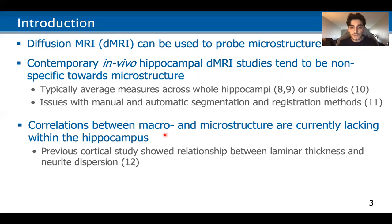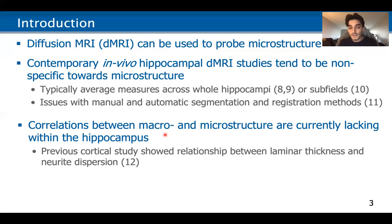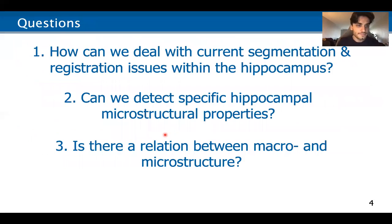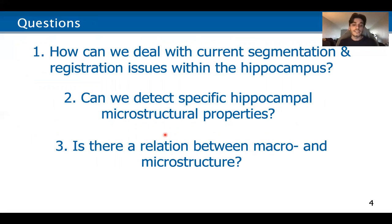Correlations between macro and microstructure are currently lacking within the hippocampus. A previous cortical study showed there's a relationship between laminar thickness and neurite dispersion. And as mentioned, automatic segmentation methods may distort gyrification, which if related to microstructure could affect those measures. The questions we ask here are: how can we deal with current segmentation and registration issues? Can we detect specific hippocampal microstructural properties? And is there a relation between macro and microstructure?